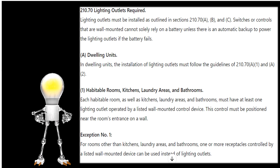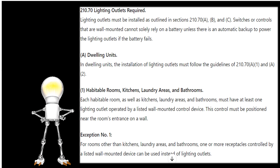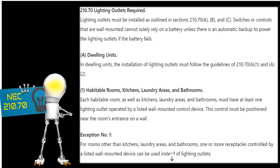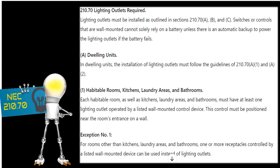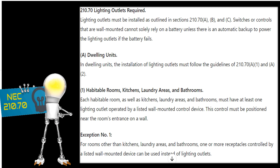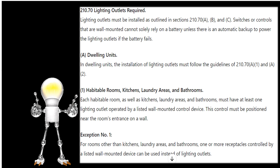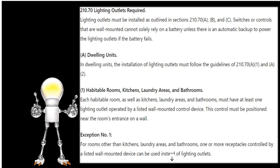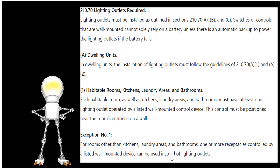One thing to watch out for: in this 2023 version, they've added laundry areas. In previous code cycles, it was only required to have actual lighting outlets in kitchens and bathrooms. The reason behind the code is so you don't have switch-controlled receptacles in a kitchen or bathroom — meaning you'd have to plug in lamps just to get light. The same holds true in the laundry area; we don't want lamps just to fold laundry. The 2023 cycle recognized this needed to be added, and it's an excellent addition.